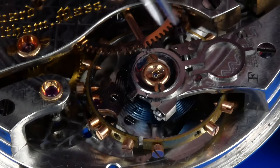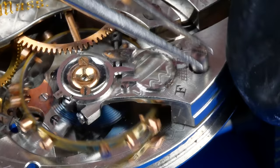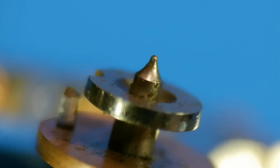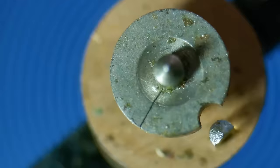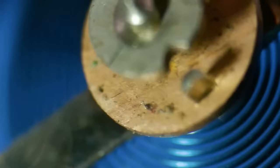The balance wheel is secured to the balance cock by way of the hairspring. The stud screw is loosened so that the hairspring stud can be released. As you can see here, both the upper and the lower balance pivots are gone. Not only that, the safety table of this double roller has a big crack.